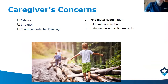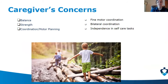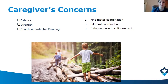For at-home intervention, the focus is on what's most commonly seen in the clinic regardless of age — it's more about the child's current limitations. Common caregiver concerns in physical therapy include balance, strength, and coordination/motor planning. On the occupational therapy side, common concerns include fine motor coordination, bilateral coordination, and independence in self-care activities. Each area will have a dedicated slide with detail and suggested activities.